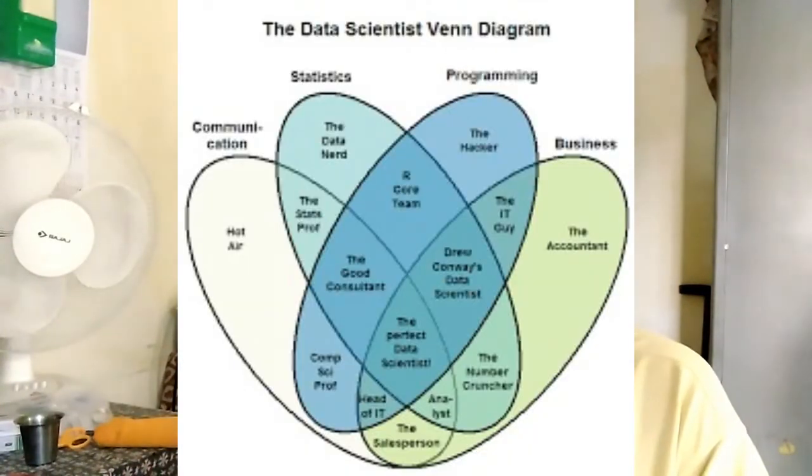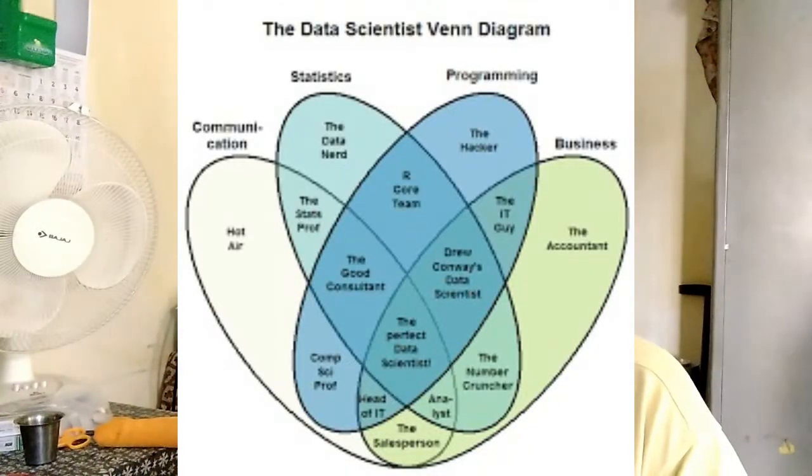In smaller software companies, one person handles data analysis, engineering, and science — doing all three roles. That person will be called a data engineer or data scientist depending on the context. For example, suppose there are around 50 software engineers — in that case, one data scientist will be there, and their work covers data analysis, engineering, and science combined. All roles fall under that one person.